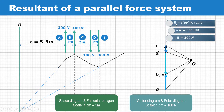The resultant magnitude is given by length AE into scale — 2 cm multiplied by 100 gives 200 Newton. The direction is upward, and its location is X equal to 5.5 meters from the 200 Newton force. In this way we can find the magnitude, direction, and position of the resultant in case of a parallel force system.